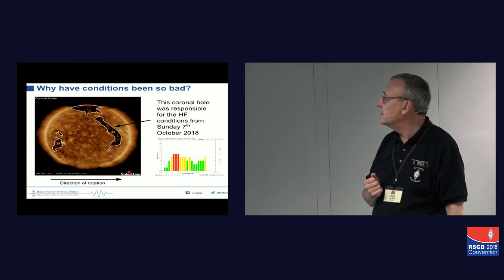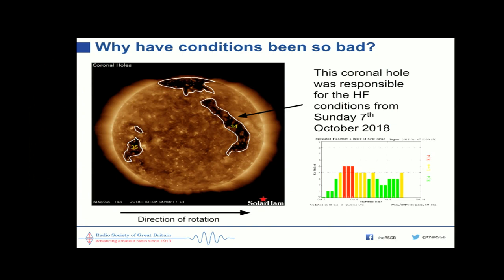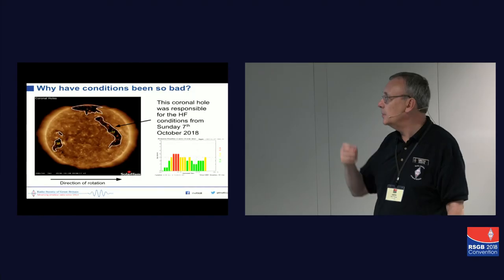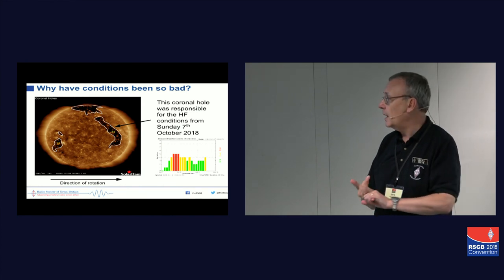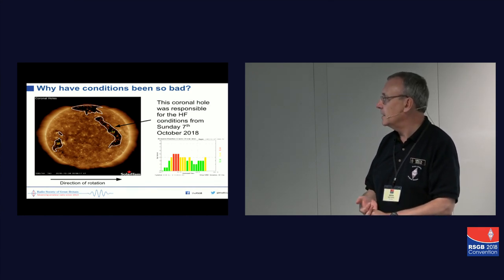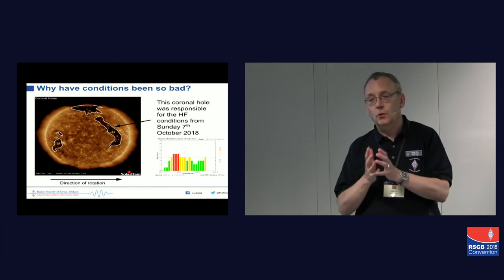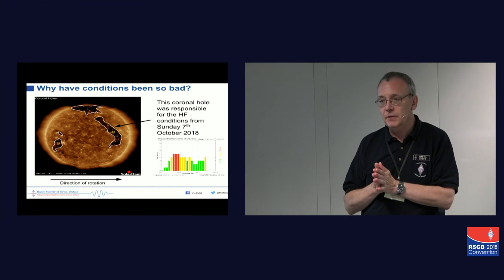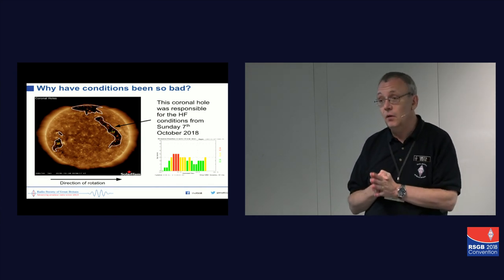For example, this was last weekend. This coronal hole that I've indicated there was the one that was responsible for these conditions here. We had a very, very high K index on October the 7th, and then it tailed off a little bit, but we had a K of 5. So, when we get a K index of 5 like that, this is when you're going to start seeing aurora. This is when the bands, the maximum usable frequency is going to go down. Generally, a high K index is associated with auroral conditions and poor HF conditions, but there is something else that we need to talk about, and that's something called the positive phase of a geomagnetic storm. Sometimes when this plasma, the solar wind, first hits, conditions can actually improve.